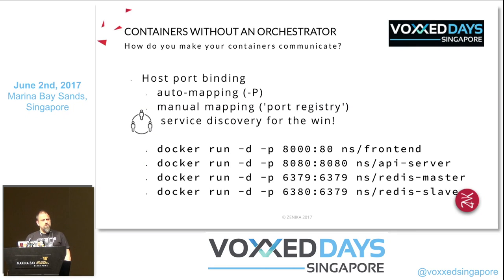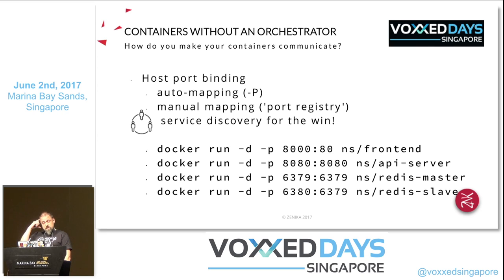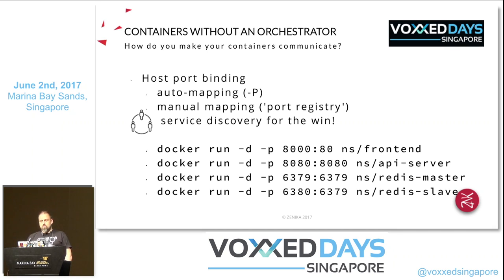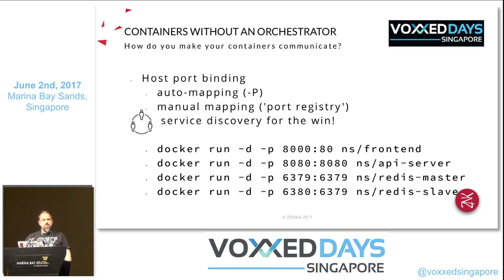What about networking? If you want to expose ports, you have two ways: either use Docker's auto port mapping with the uppercase -P flag, or manually bind ports on your host to your containers. For example, if you had to launch two Redis containers on the same host, you'd have to assign two distinct mapped ports manually — that's not very nice. In that case you'd probably also need a dedicated service discovery tool like Consul or etcd.